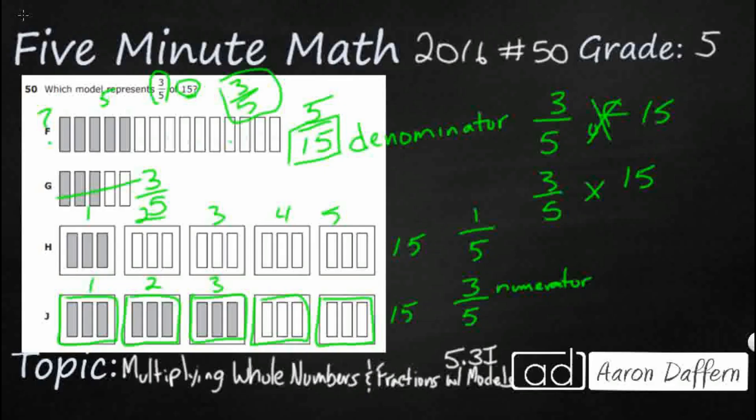Three-fifths is a fraction. 15 is a whole number. Here's the trick. You can turn any whole number, any whole number in the world into a fraction if you put it over one. So 15 ones or 15 wholes.